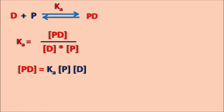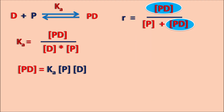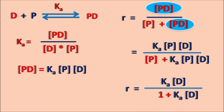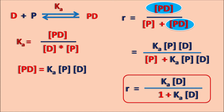Now let us substitute this value into the previous equation. We have R equals Pd by P plus Pd. Replacing Pd with Ka·P·D, R equals Ka·P·D divided by P plus Ka·P·D. The concentration P is common in the numerator and denominator, so simplifying, it becomes R equals Ka·D divided by 1 plus Ka·D. This equation indicates that the rate of protein binding depends on the concentration of the drug.